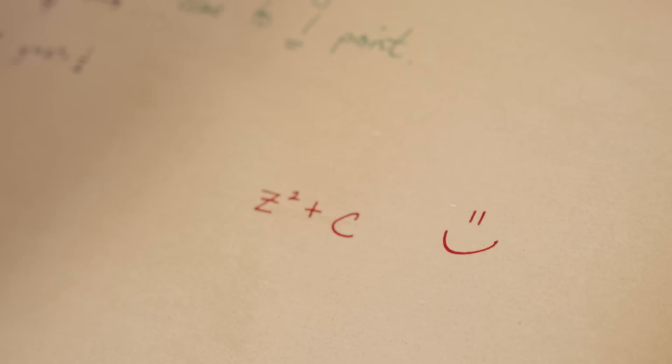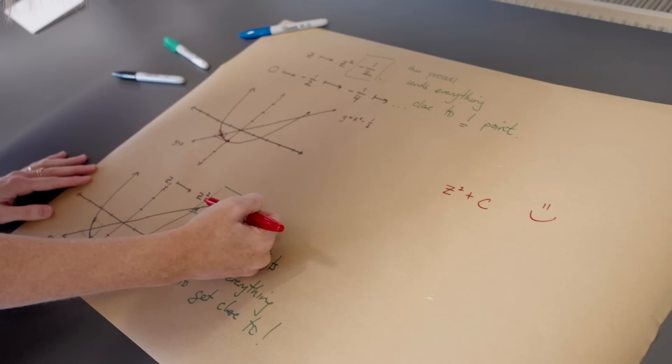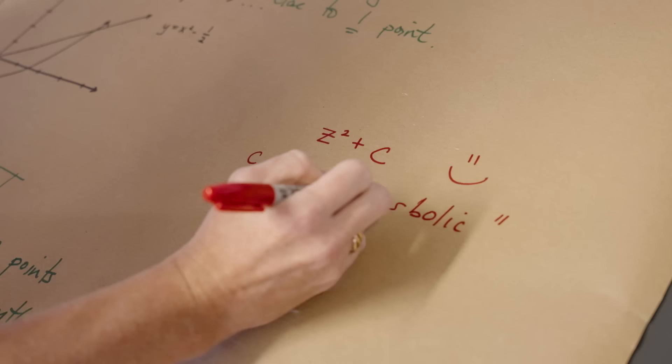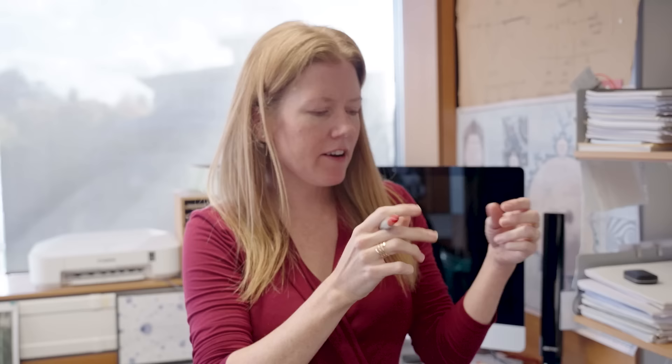So if this happens for a number c, that when you do this process to zero, you get this finite list of points, then you would say that c is hyperbolic, if this list is finite. That we iterate and iterate and iterate, and we're getting closer and closer and closer to one of this finite collection of points on the graph.